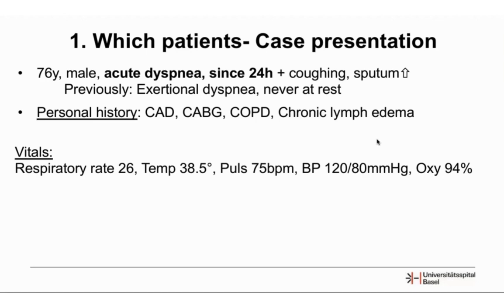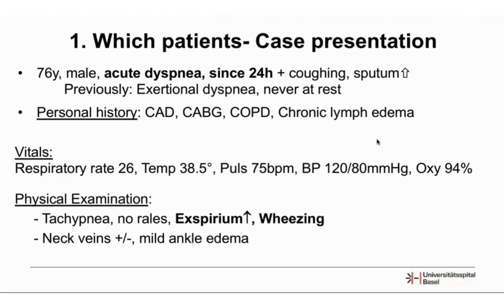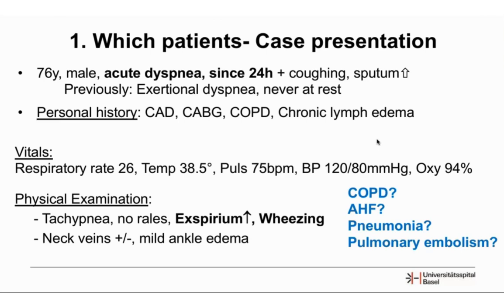On physical examination he had a high respiratory rate and fever, but pulse, blood pressure, and oxygen saturation were within normal range. On auscultation there was tachypnea, no rales, but a prolonged expiration and wheezing. We noted mild ankle edema, but the patient told us these were his usual edema from chronic lymphedema. So we moved on to consider potential differential diagnoses for his acute dyspnea.